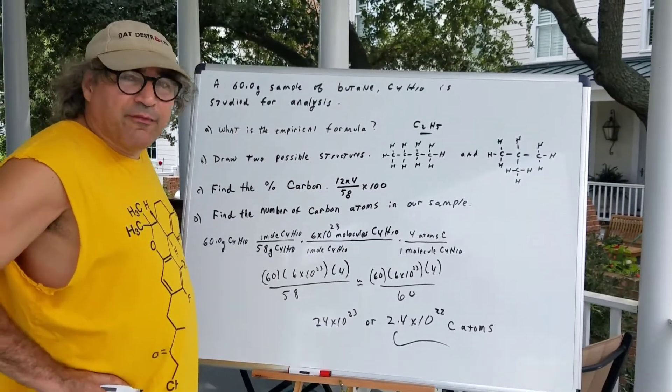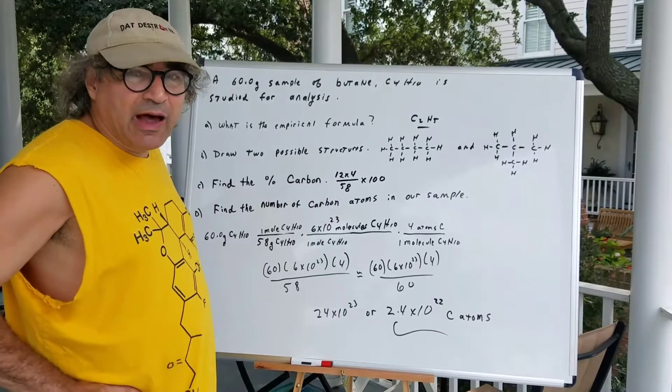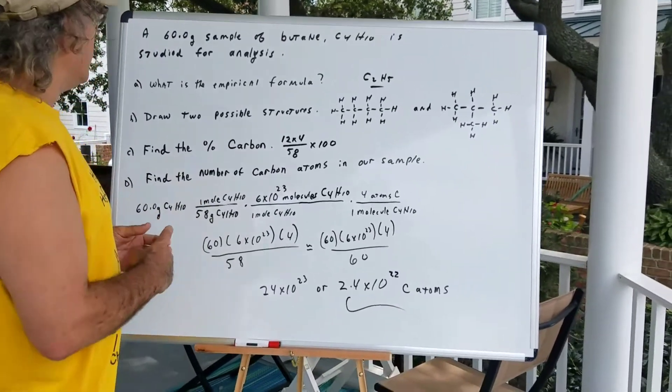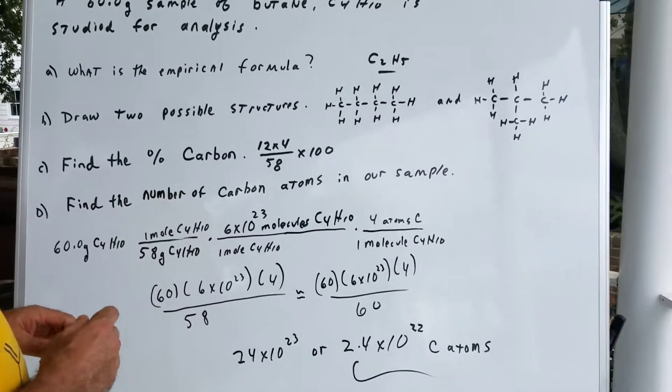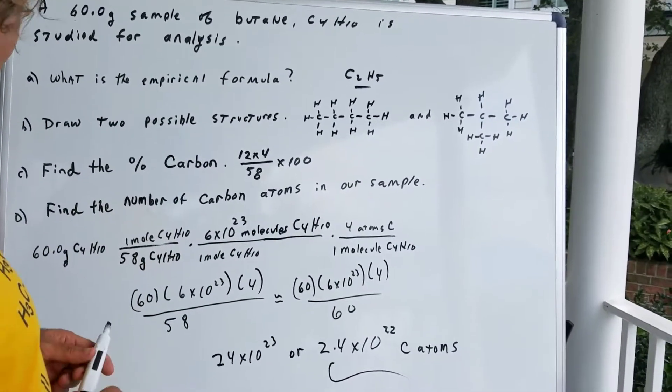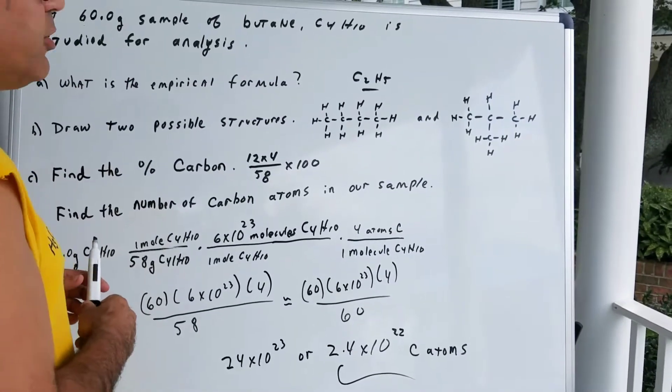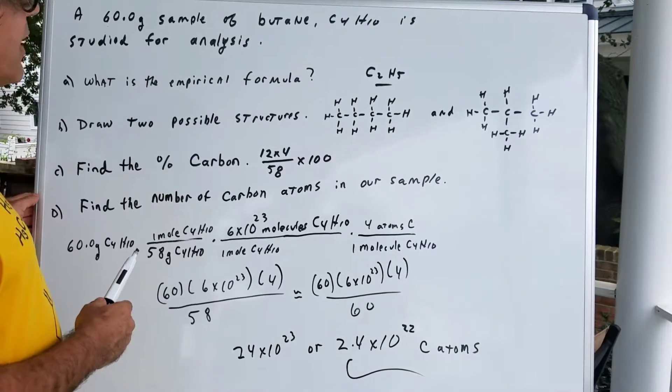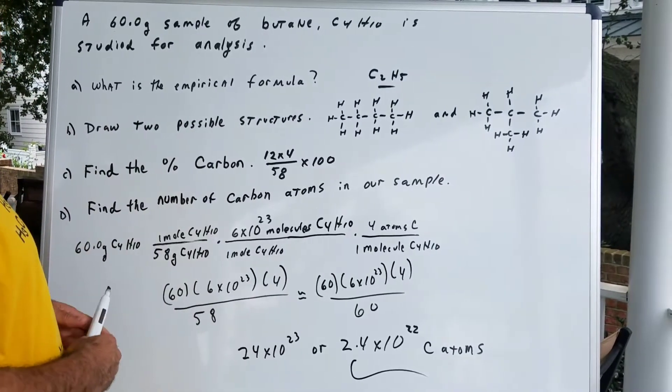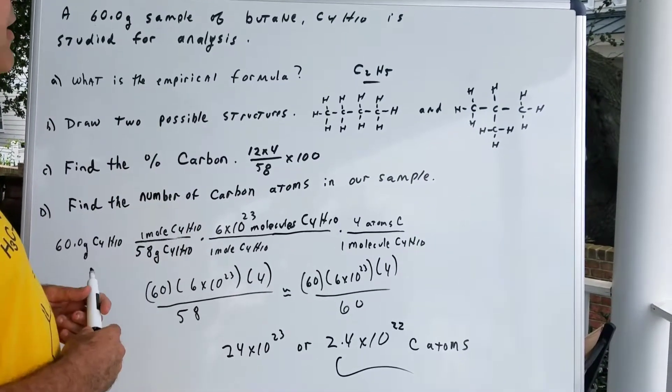I'm not going to give you anything to drink, but if you have a thirst, have a thirst for some knowledge. Let's go over a general chemistry problem. This is a very important Gen Chem question, and there's some important things we need to know. I wrote down to you that we have a 60-gram sample of butane, C4H10, for analysis. And I want to know what's the empirical formula.